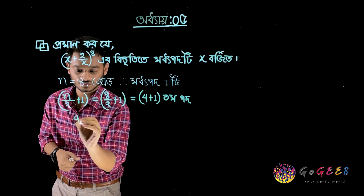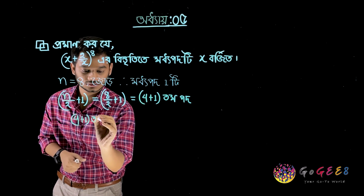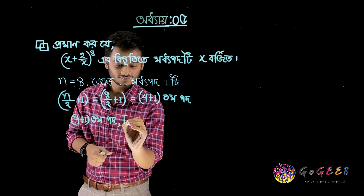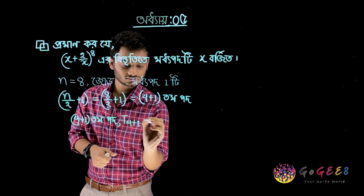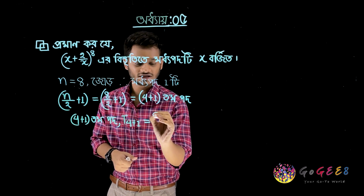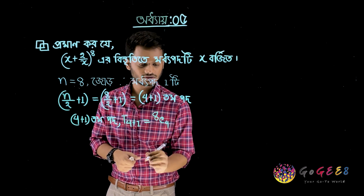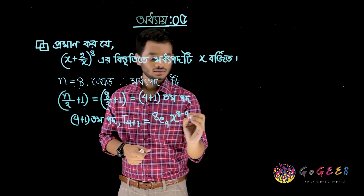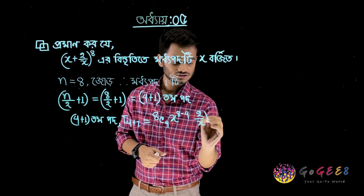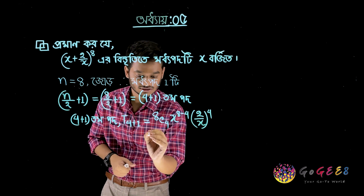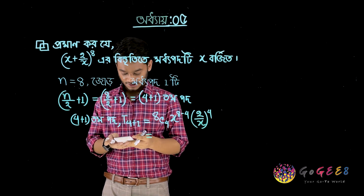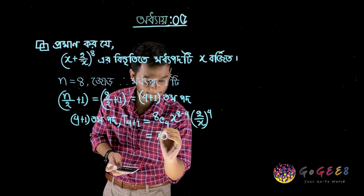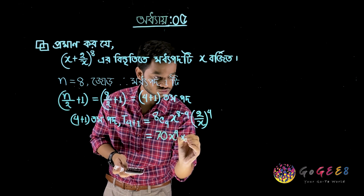4 plus 1 — I'm going to be able to repel it. 4 plus 1. T of 4 plus 1. Goes to Aramaic: I'm going to be 4. H, C, 4. X to the power 8 minus 4. I'm going to be 2 by X to the power 4. I'm going to be 8C4. I'm going to be 7d. X to the power 4 into 2 to the power 4.